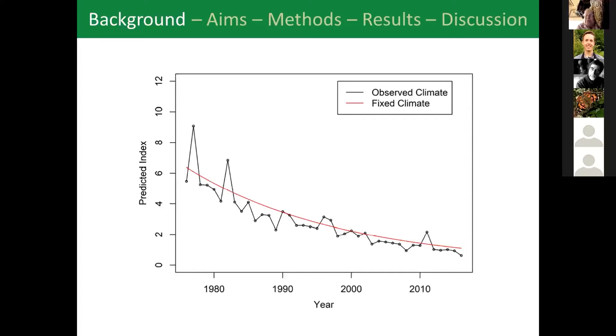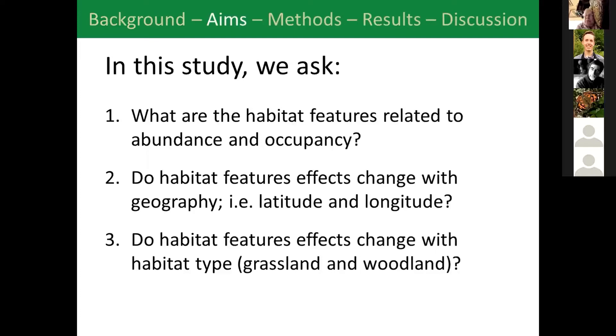Because we noticed there are steeper declines in the north it raises some questions - for example, are the habitat requirements stricter in the north and could that maybe be one of the reasons why they're declining more there, maybe they need more intervention or is there something else at play? For that purpose we decided to ask the following questions: what are the habitat features related to abundance and occupancy, so what are some predictors of suitable habitat? Do these predictors change with geography - are there different predictors in the north and the south or in the east and the west? And finally do habitat features change with habitat type - do grizzled skippers require different habitat in woodland or grassland dominated areas? There could be some biotic or abiotic factors that lead them to require different conditions.